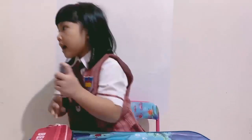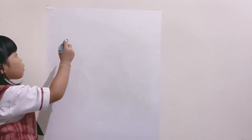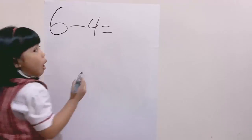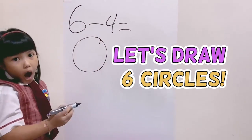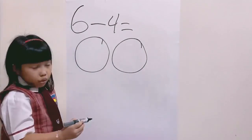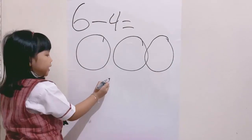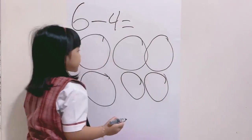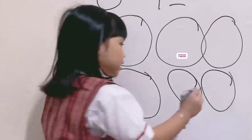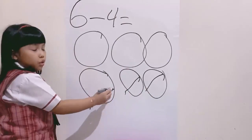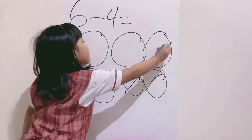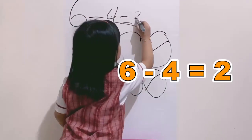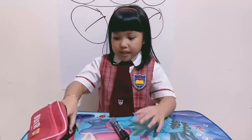The third example is using pictures. Let me get my crayon. So we count 6 minus 4 equals to what number? 1, 2, 3, 4, 5, 6. Let me cross 4. We cross 4 circles. 1, 2, 3, 4. There are 2 circles left.